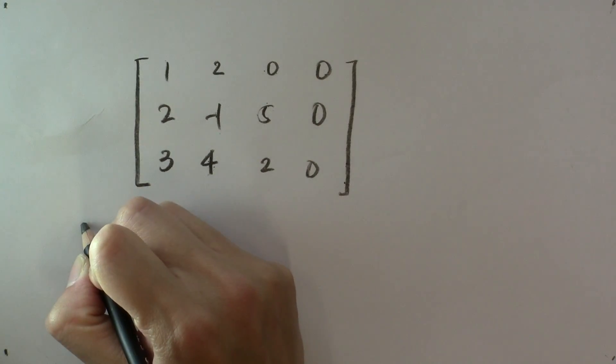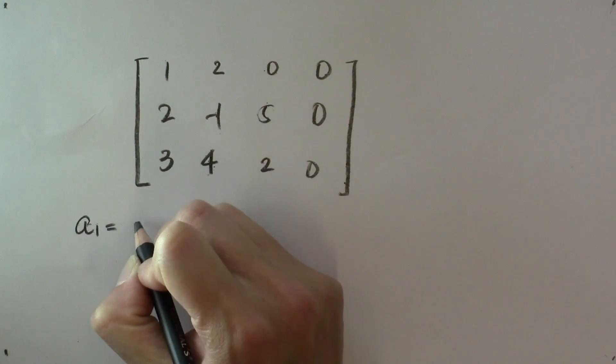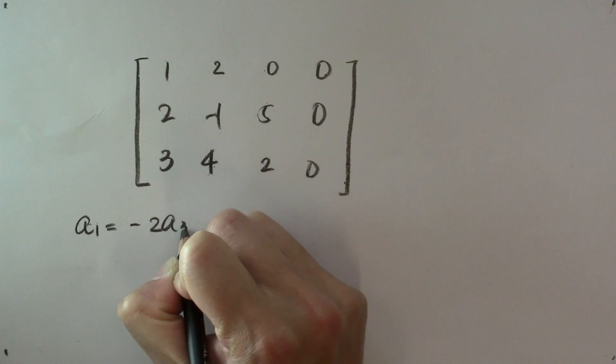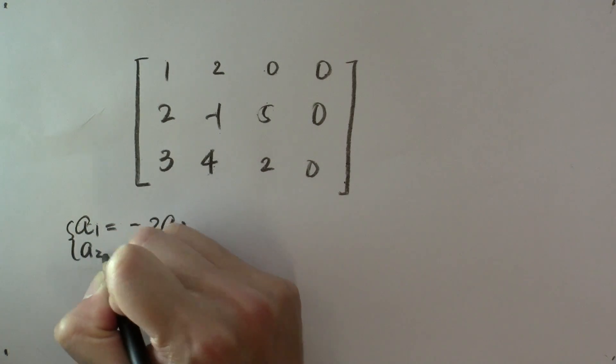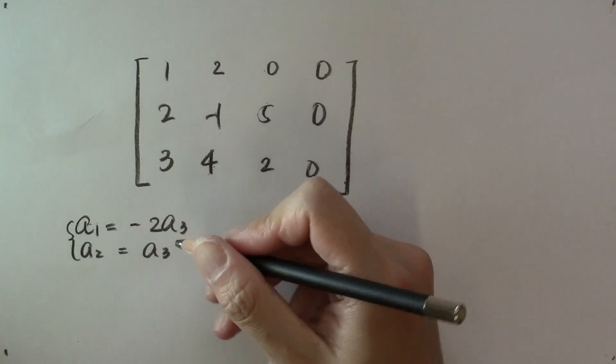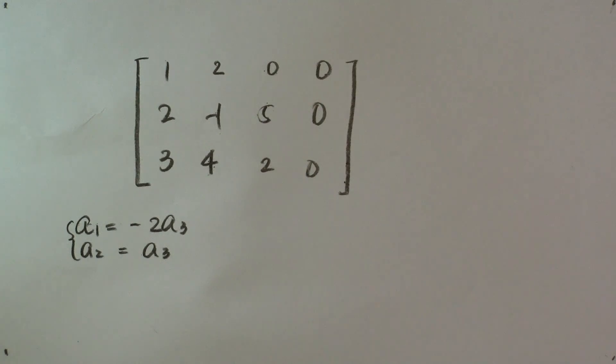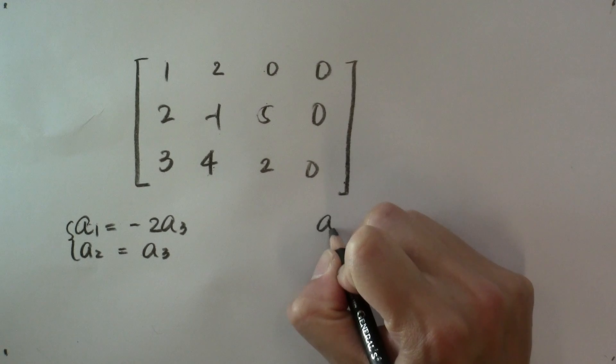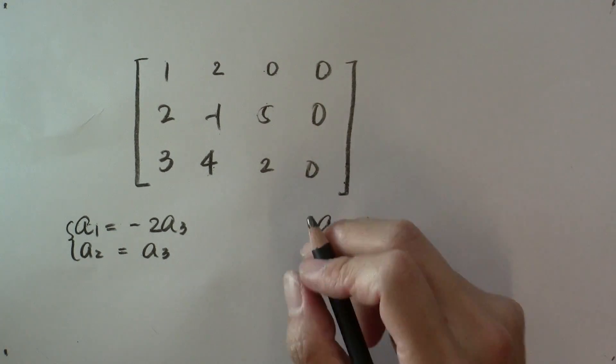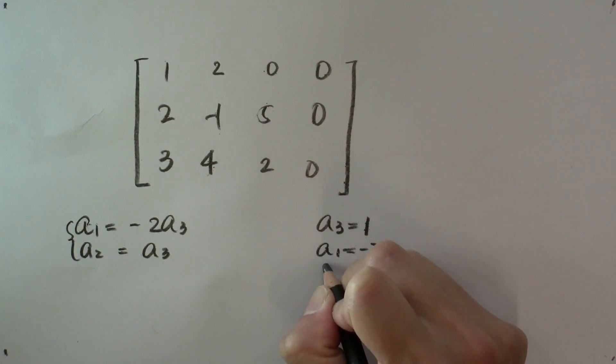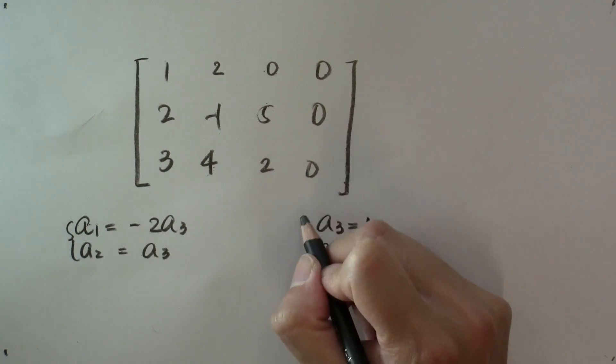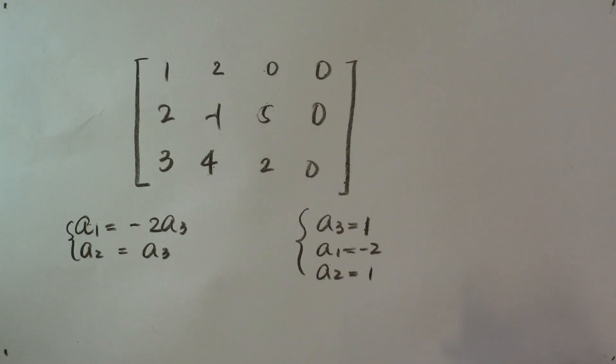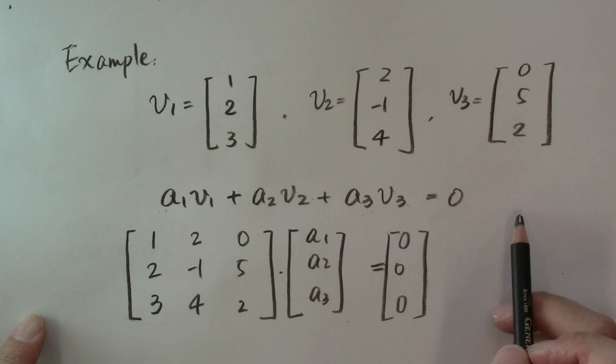And in the end, we find the solution to be a1 is equal to -2a3, a2 is equal to a3, where a3 is a free variable. That means we can set a3 to be anything. Let's say a3 is equal to 1, then that means a1 is -2, a2 is 1.